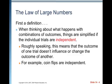Now a big definition, and it's important to know before we move into the law of large numbers. When thinking about what happens with combinations of outcomes, things are simplified if the individual trials are independent. Roughly speaking, this means that the outcome of one trial doesn't influence or change the outcome of another.